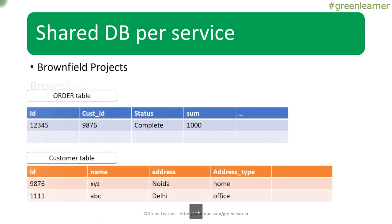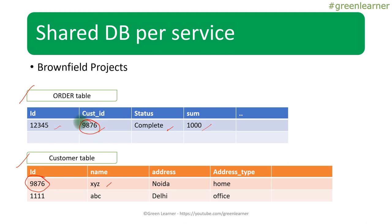Let's see a real-time example. We have an order table with fields like ID, customer ID, status, and total amount to pay. We have a customer table with customer details and an ID. This ID is related between the two tables. When we have segregated the business logic into order microservice and customer microservice, we can do that — but we may have to share this database. There is no harm in doing so initially, but future plans should be to segregate.